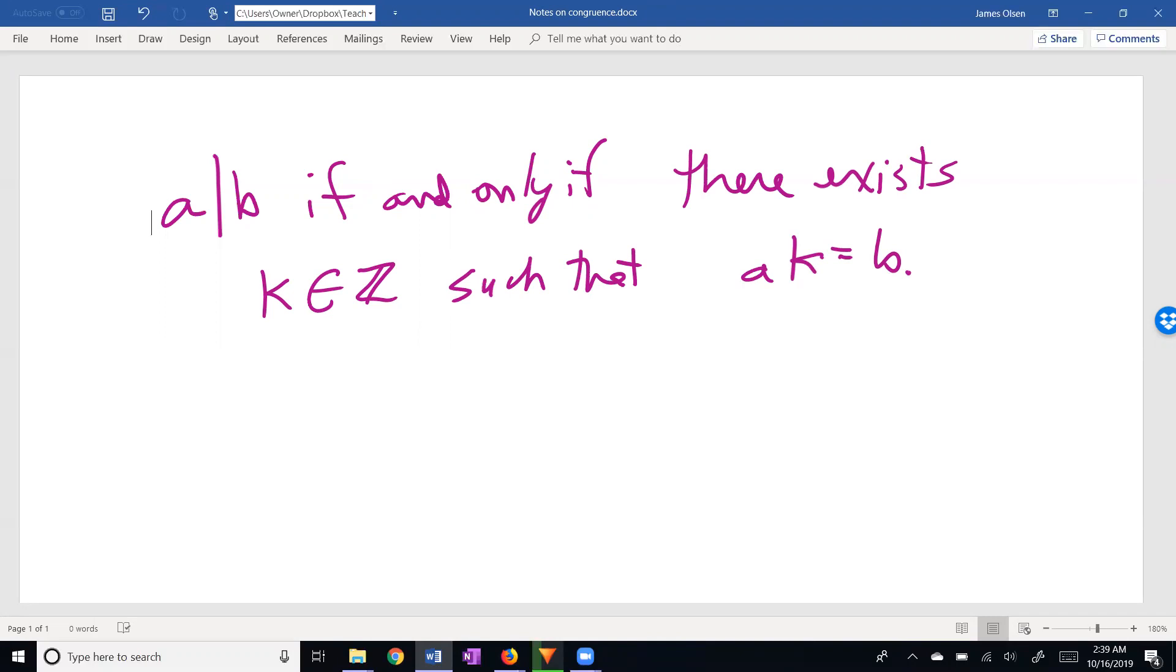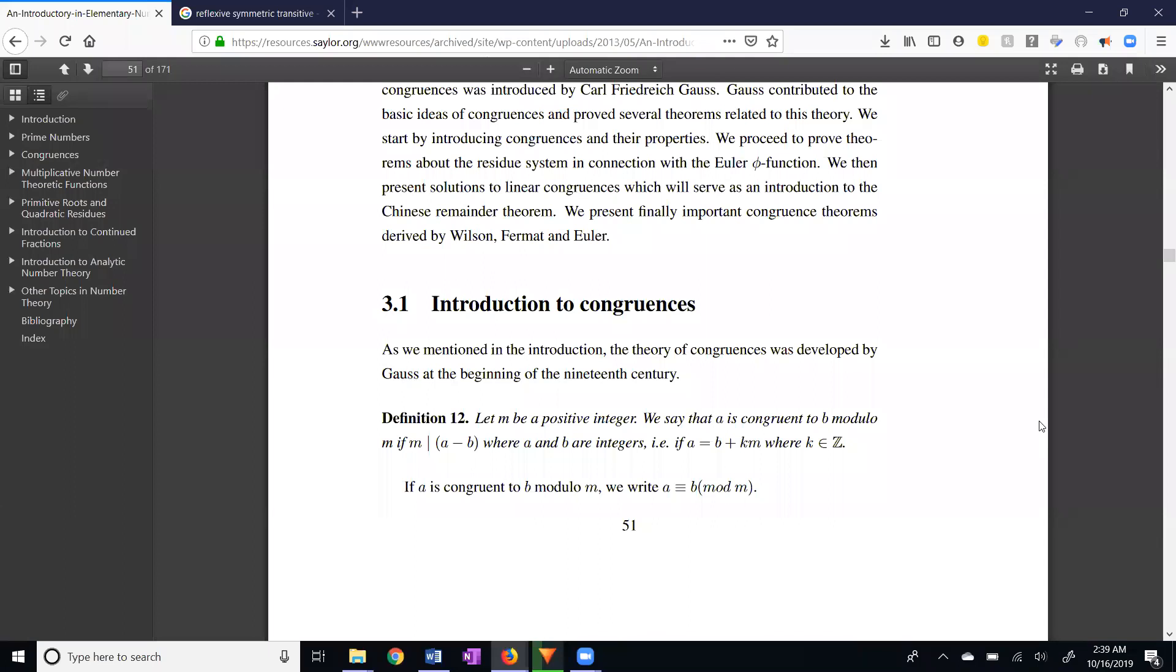Now let's look at the definition of congruence. Definition 12: Let M be a positive integer. We say that A is congruent to B modulo M if M divides A minus B where A and B are integers.